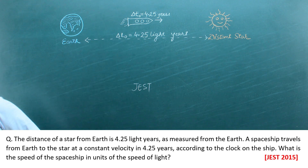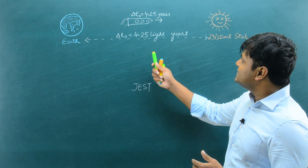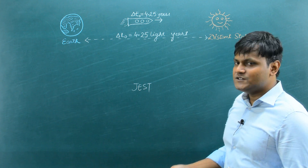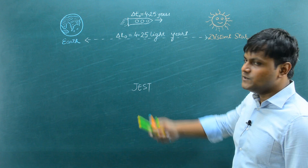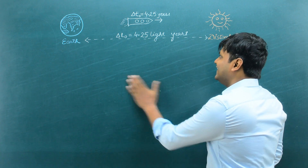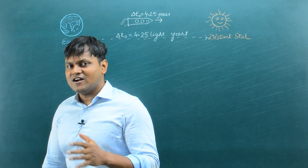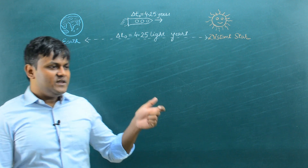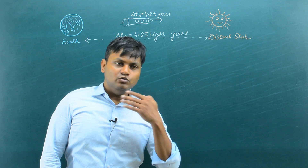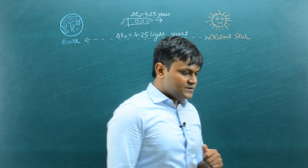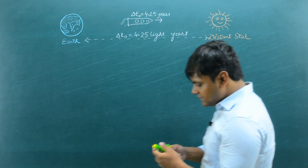This is a very interesting problem because the distance turns out to be 4.25 light years, and distance divided by time gives us the speed of light. So it looks like at first glance that the speed of the spaceship is the speed of light, which is not the case. When an object starts moving at very high speeds, the time periods and distances they measure are not the same as measurements in a rest frame of reference. Let us look at what happens from the perspective of two different observers.